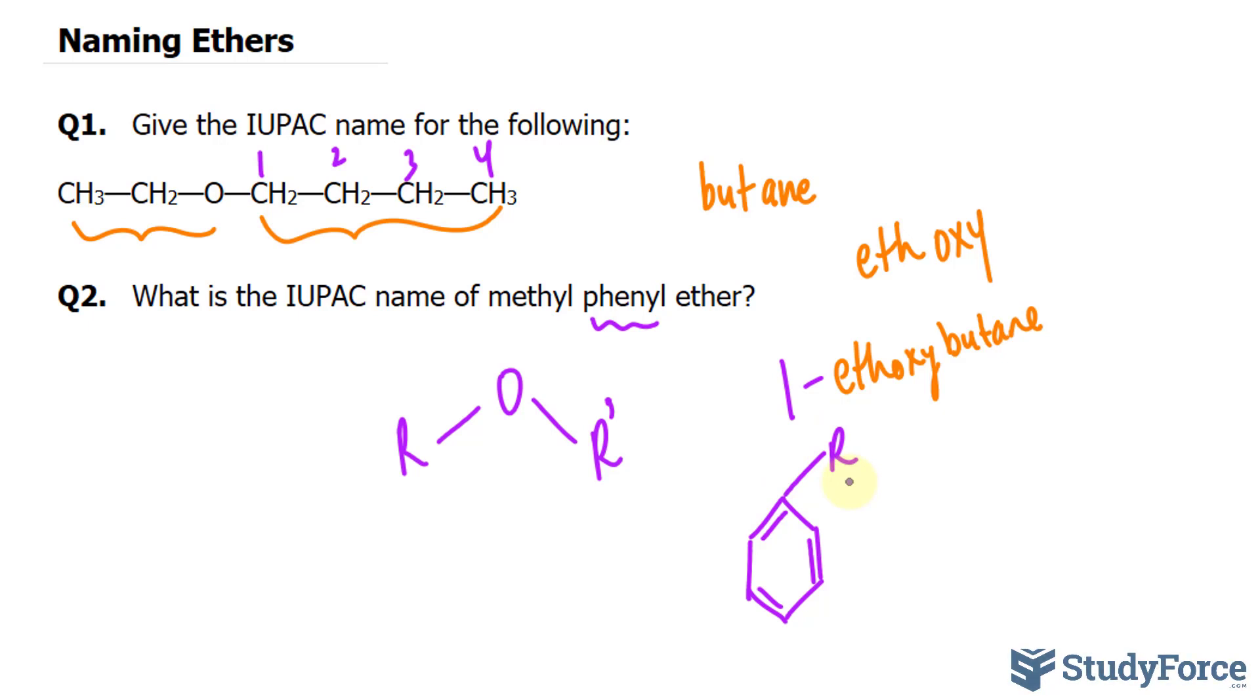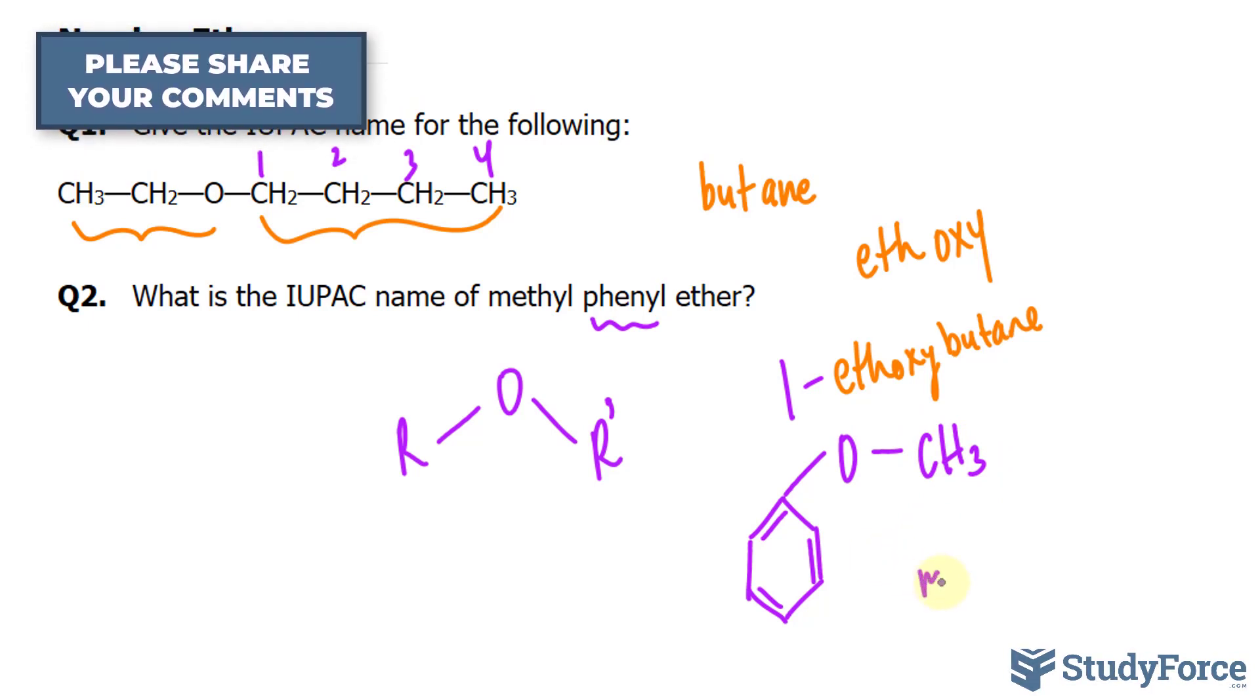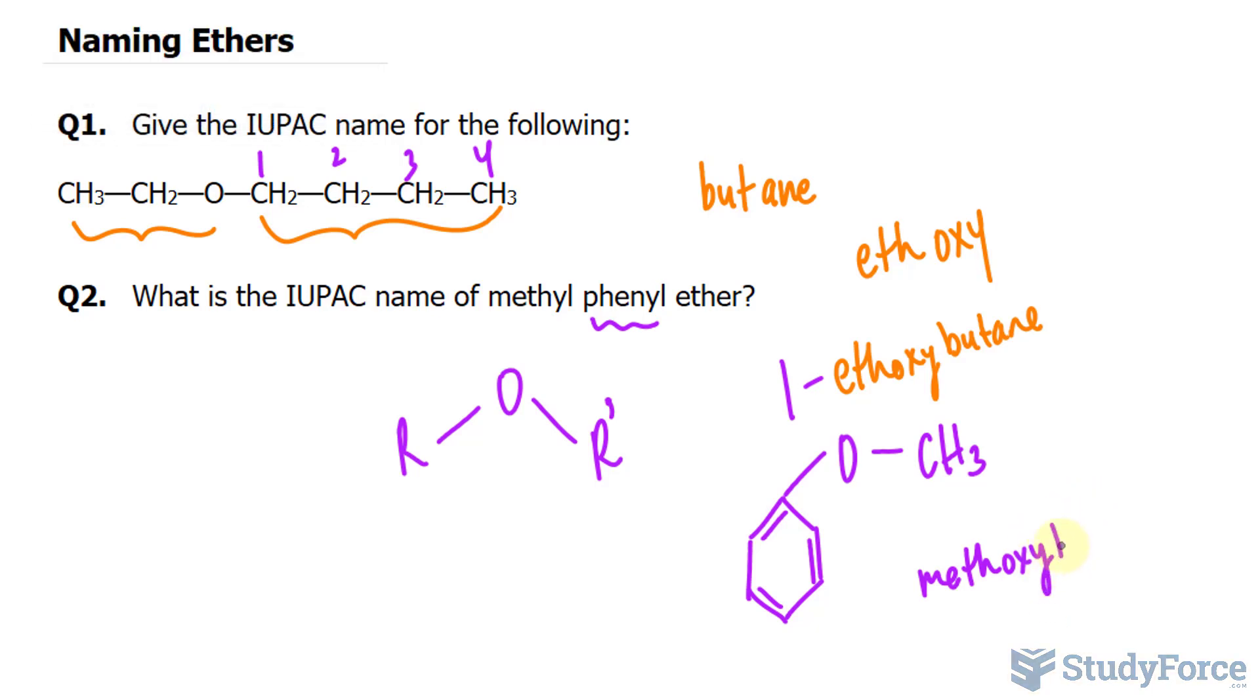Phenol ether suggests that we have this ring attached to oxygen, and the fact that we have methyl suggests that this R is methyl, CH3. So if we were to name this using the IUPAC nomenclature, we would say methoxybenzene.